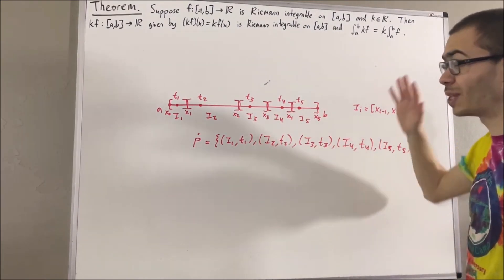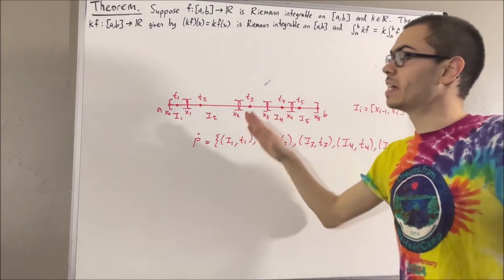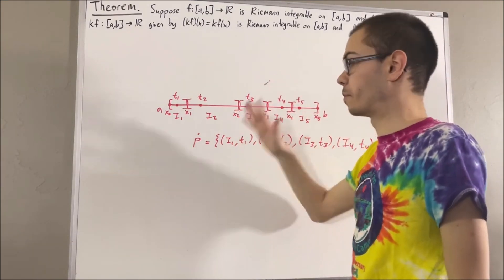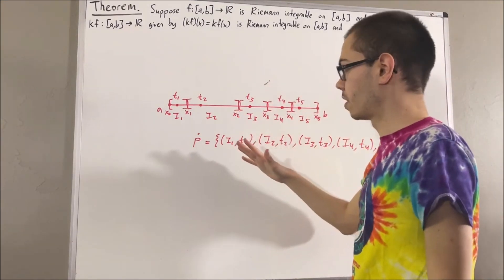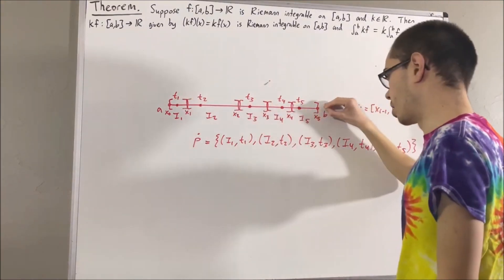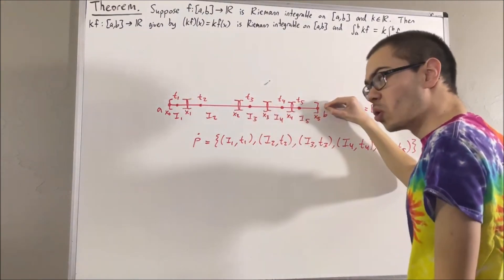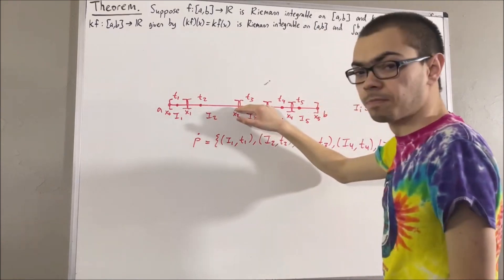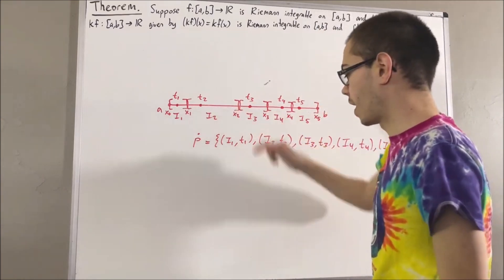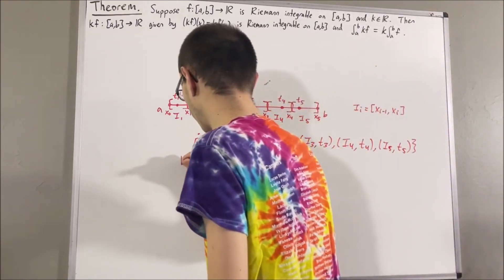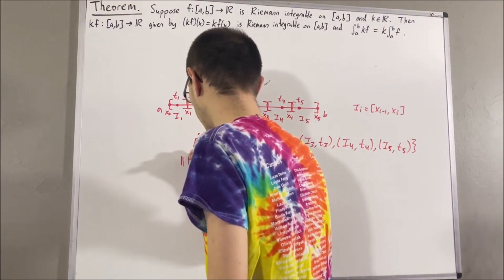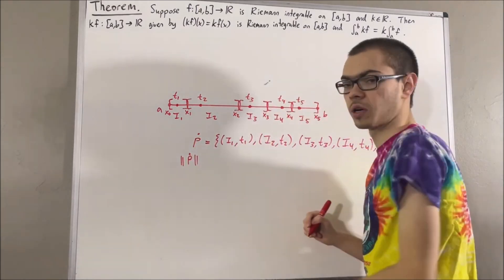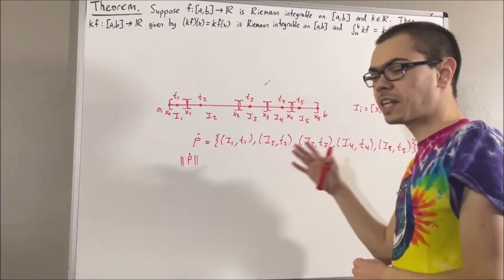The norm of a partition is the length of the longest sub-interval of the partition. So in this partition, the norm is going to be the length of I₂. The way that we symbolize the norm of a partition is with double vertical bars.